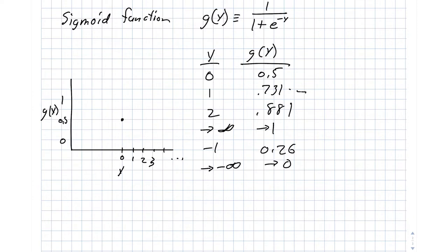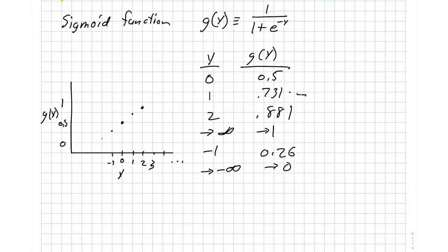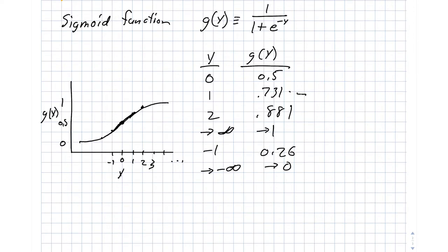y of 1 is sitting at 0.73, and it turns out on the other side, y of negative 1 is just a little, it is symmetric. And then 2 is 0.88, so that sits right about here, and likewise right about there. So in this region here, this function turns out to be relatively linear, but as we start getting beyond the 2s and 3s, we start to asymptote as we approach 1 here.